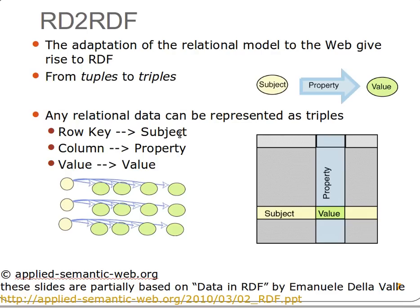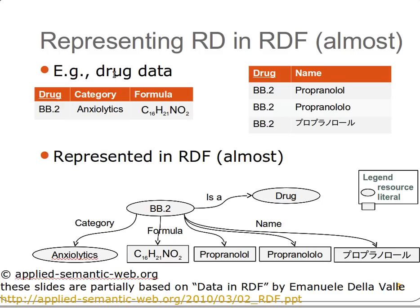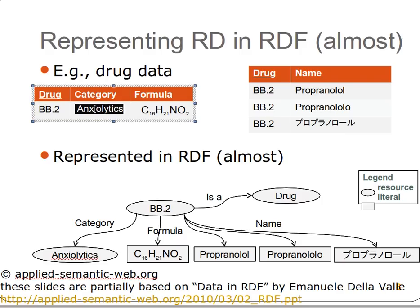For example, in some drug data we might have a drug name or drug code, a category, a formula, and other information. We can represent that in RDF by selecting a node as the subject for the drug code or name. That drug has property 'category' with some value, has property 'formula' with some value, and has property 'name' with some value — and so on and so forth.